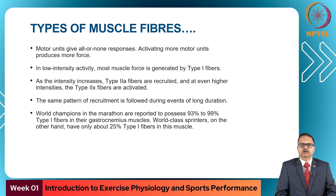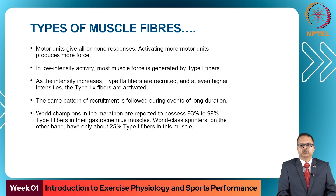Generally, motor units give an all-or-none response; activating more motor units produces more force. In low intensity activity, most muscle force is generated by type 1 fibers. As intensity increases, type 2a fibers are recruited, and at even higher intensity, type 2x fibers are activated. World champion marathoners possess 93 to 99 percent type 1 fibers in their gastrocnemius muscles, while world class sprinters have only 25 percent type 1 fibers.